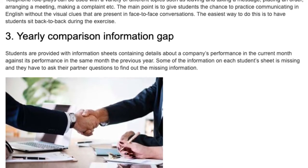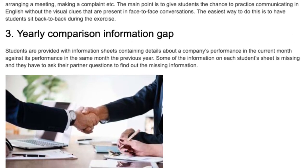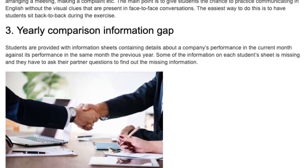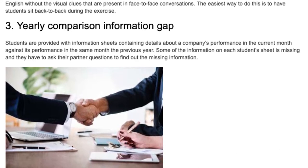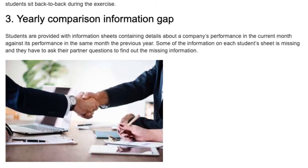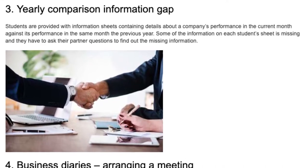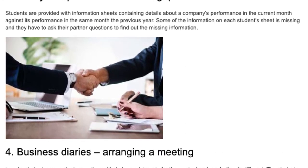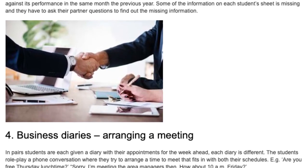Idea 3: Yearly Comparison Information Gap. Students are provided with information sheets containing details about a company's performance in the current month against its performance in the same month the previous year. Some of the information on each student's sheet is missing and they have to ask their partner questions to find out the missing information.